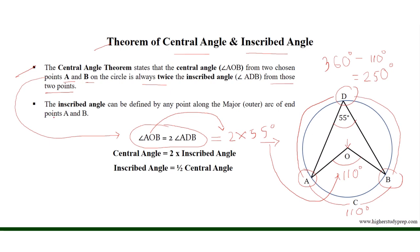The inscribed angle can be defined by any point along the major arc of endpoints A and B. Since the central angle is two times the inscribed angle, the inscribed angle is half of the central angle.